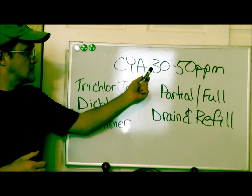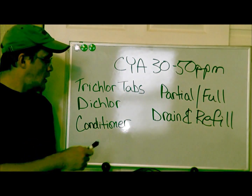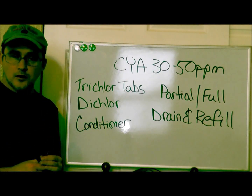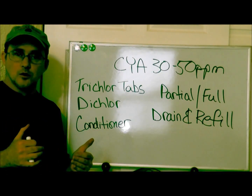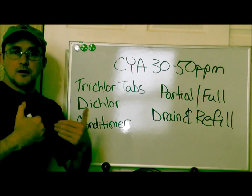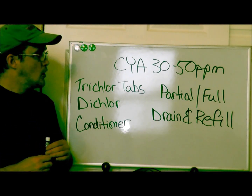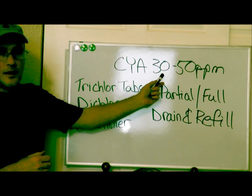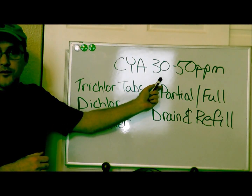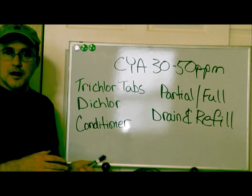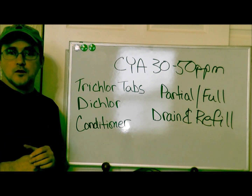If the stabilizer is too low, go ahead and shock with dichlor. For every 10 parts per million added with dichlor, you increase your stabilizer by nine parts per million. Once you hit the 30 mark, don't shoot for the 50 — once you hit the 30 mark, stop with dichlor and go to liquid chlorine.